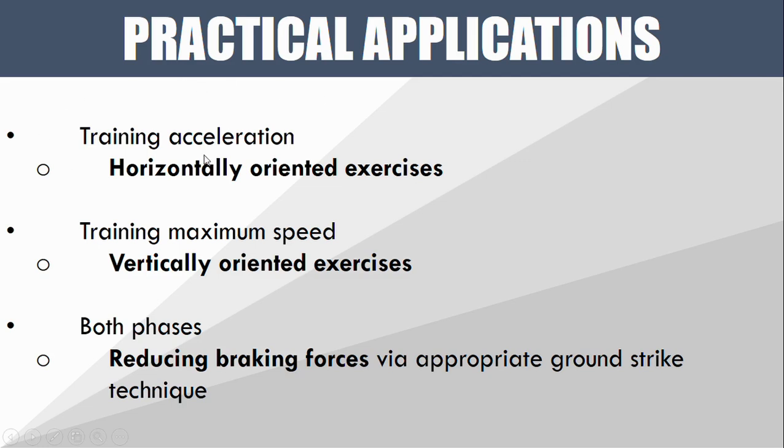The first one would be when we're training acceleration, we probably want to use more horizontally oriented exercises since there were greater horizontal forces during the acceleration phase, whereas at maximum velocity running, we probably want to use more vertically oriented exercises with a shorter contact duration—so maybe like vertical plyometrics could be a good exercise.